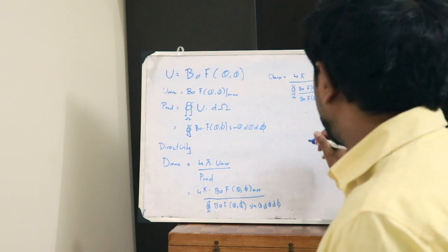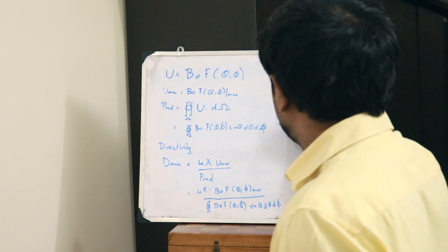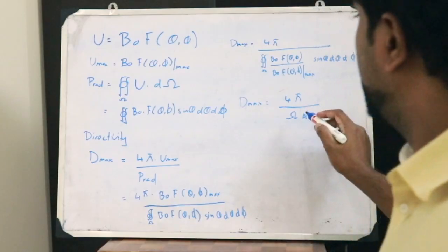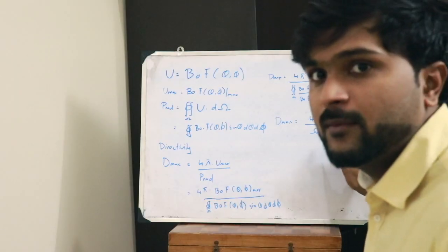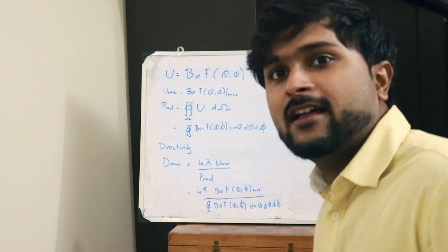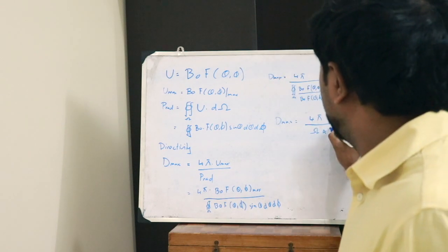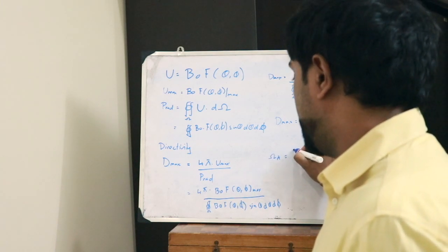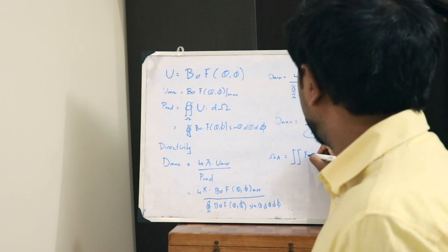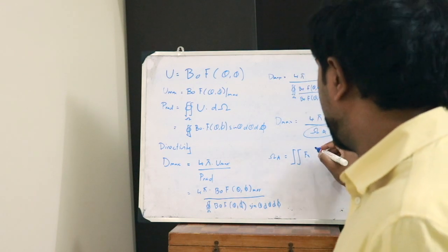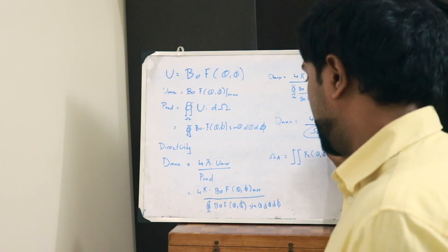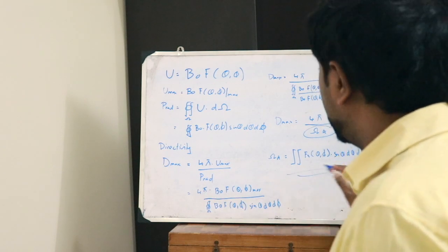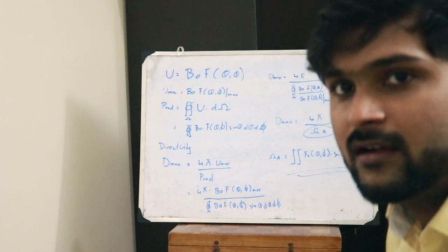Therefore, we can write D_max equal to 4π divided by a particular constant. This constant is therefore referred to as the beam solid angle. The beam solid angle Ω_A can be written as the double integral of fn(θ, φ) sin θ dθ dφ. This is the expression for beam solid angle.